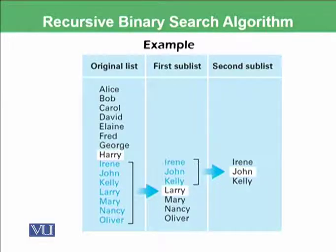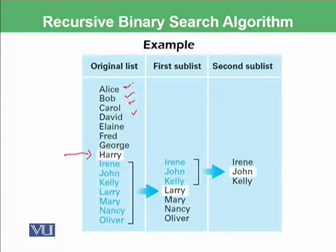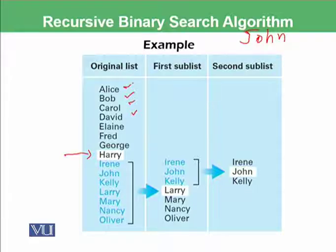Let's look at a practical example. We have an original list of 15 names: Alice, Bob, Carol, David, and so on. We select the middle name, which is Harry. We actually want to search for John. So we compare Harry with John and determine whether H is greater than J. We find that J should be somewhere later in the list.